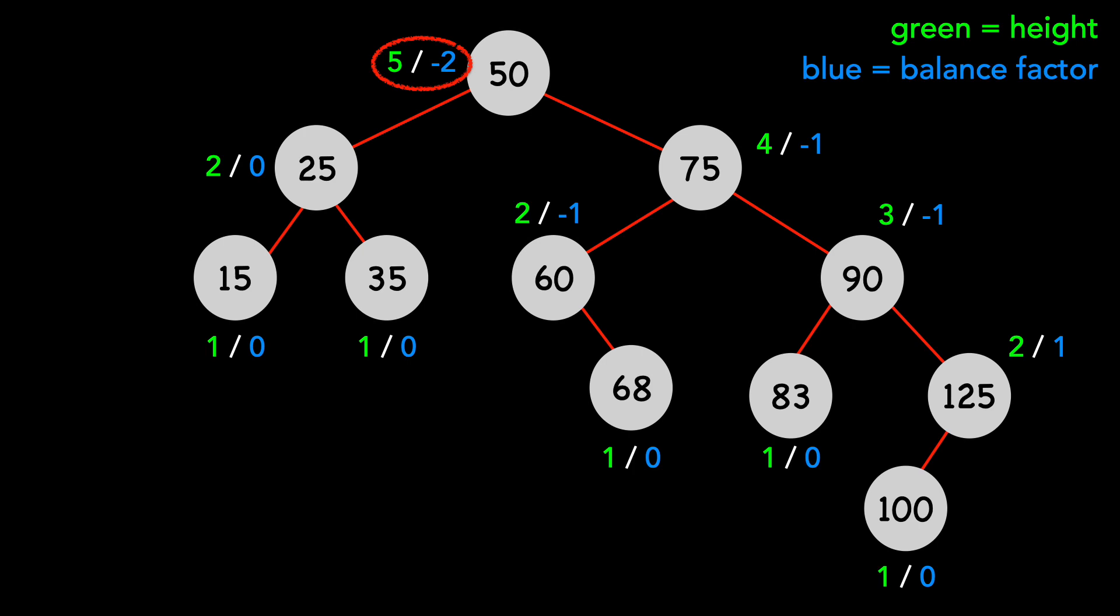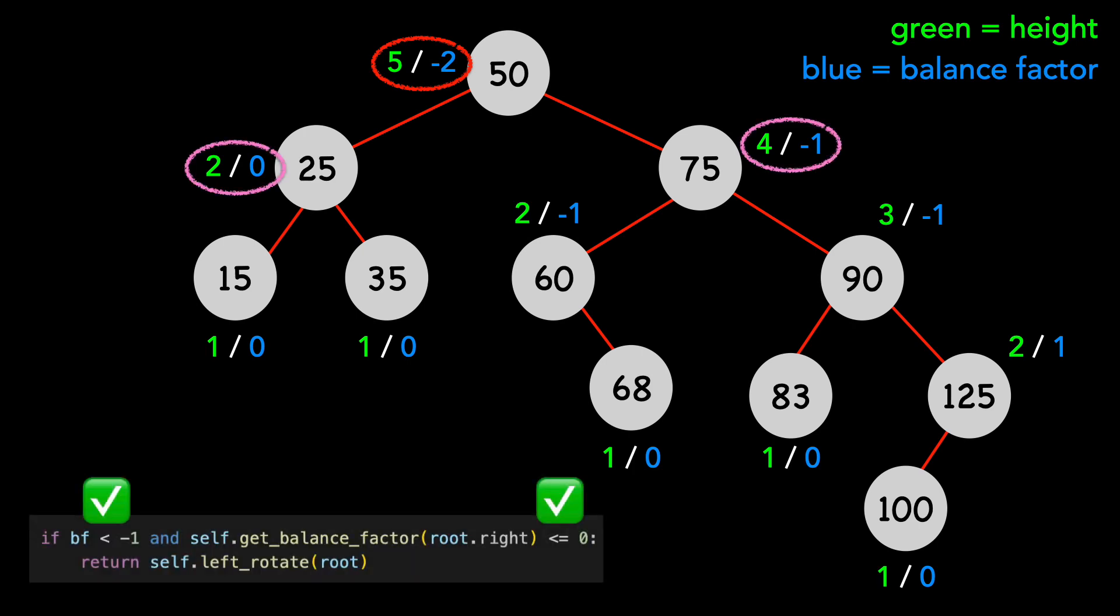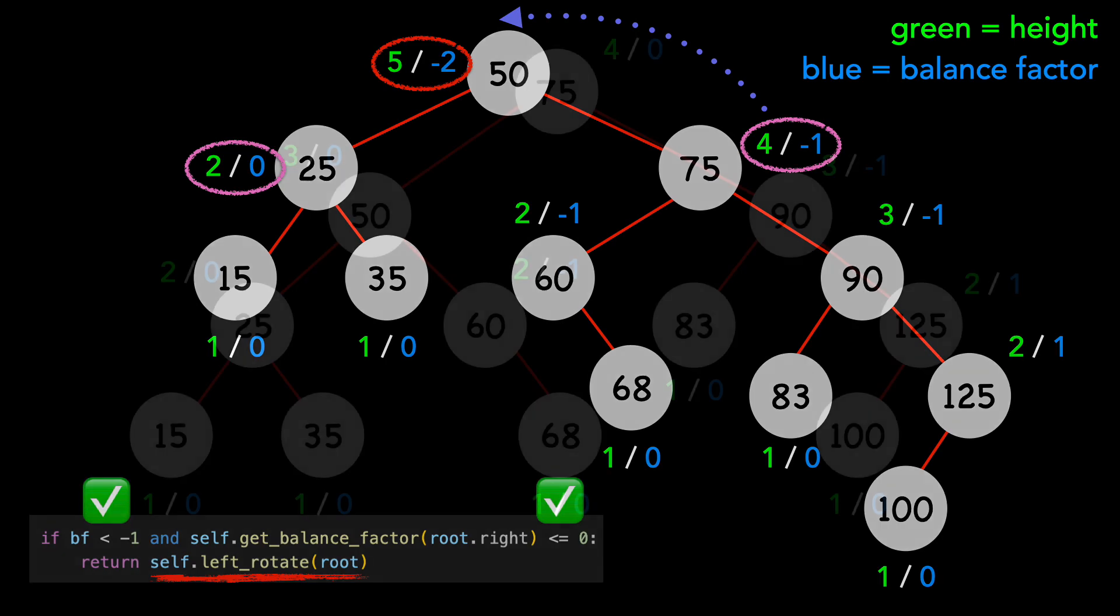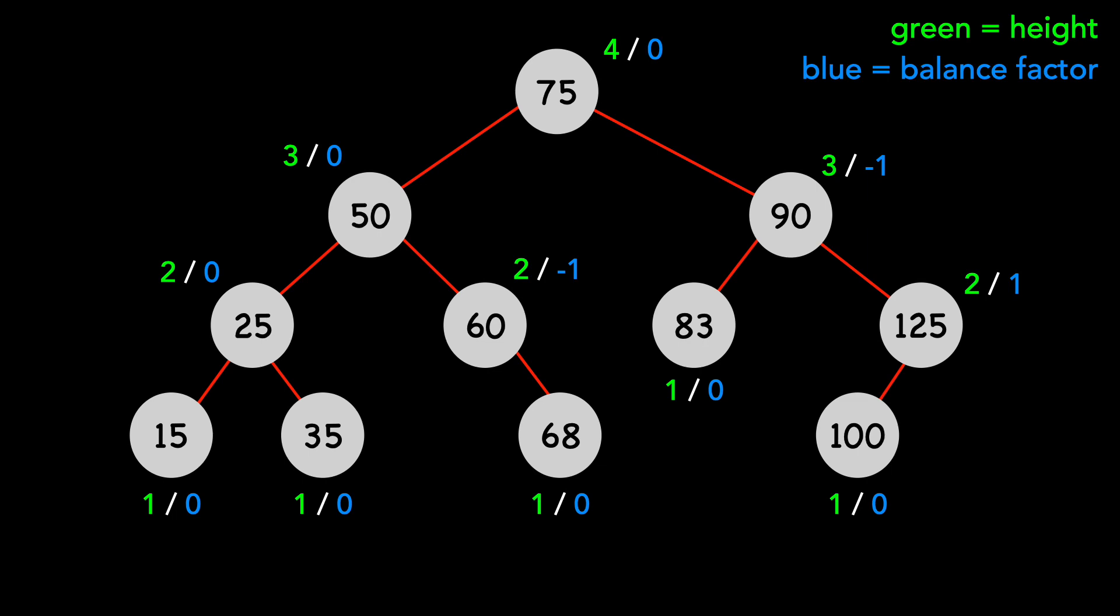This violation satisfies this if condition, so we perform a left rotation. The result of this rotation is the following tree, a valid AVL tree.